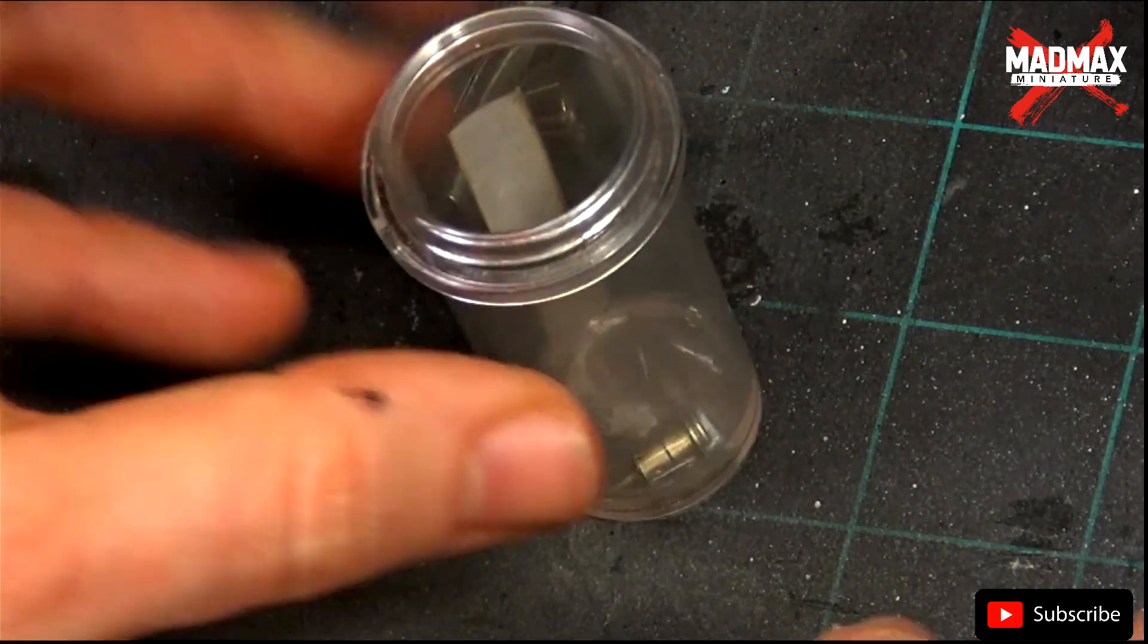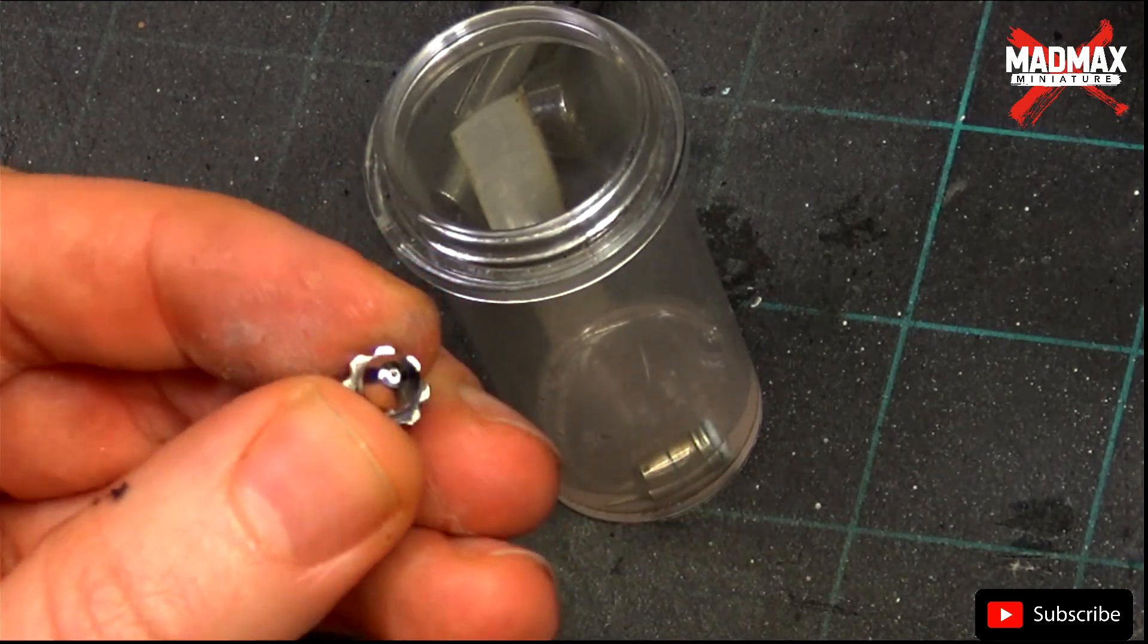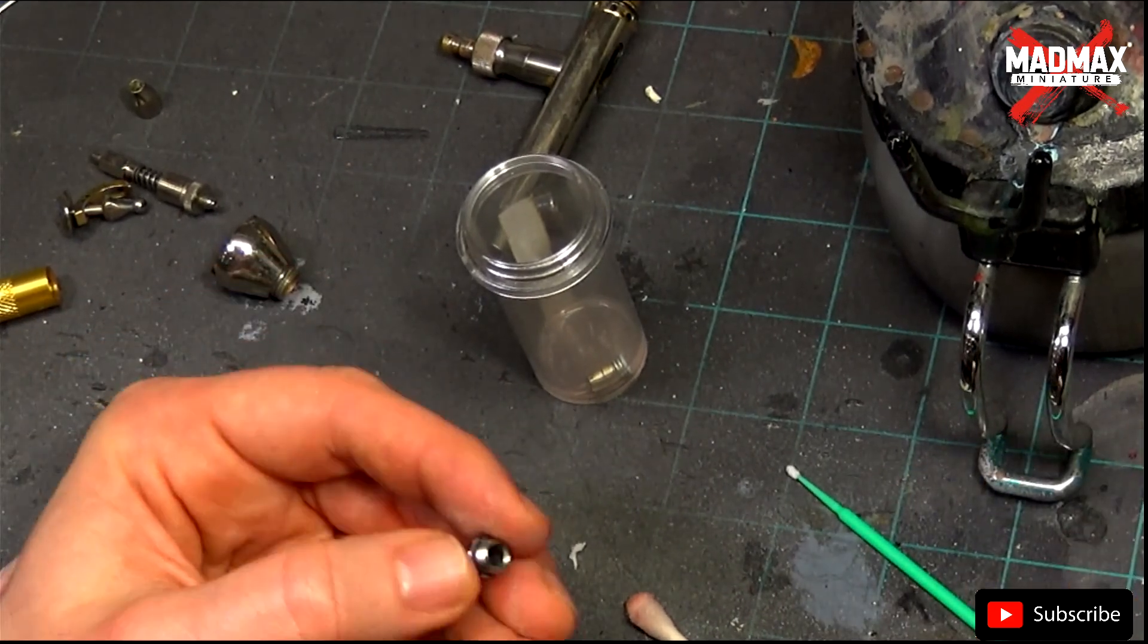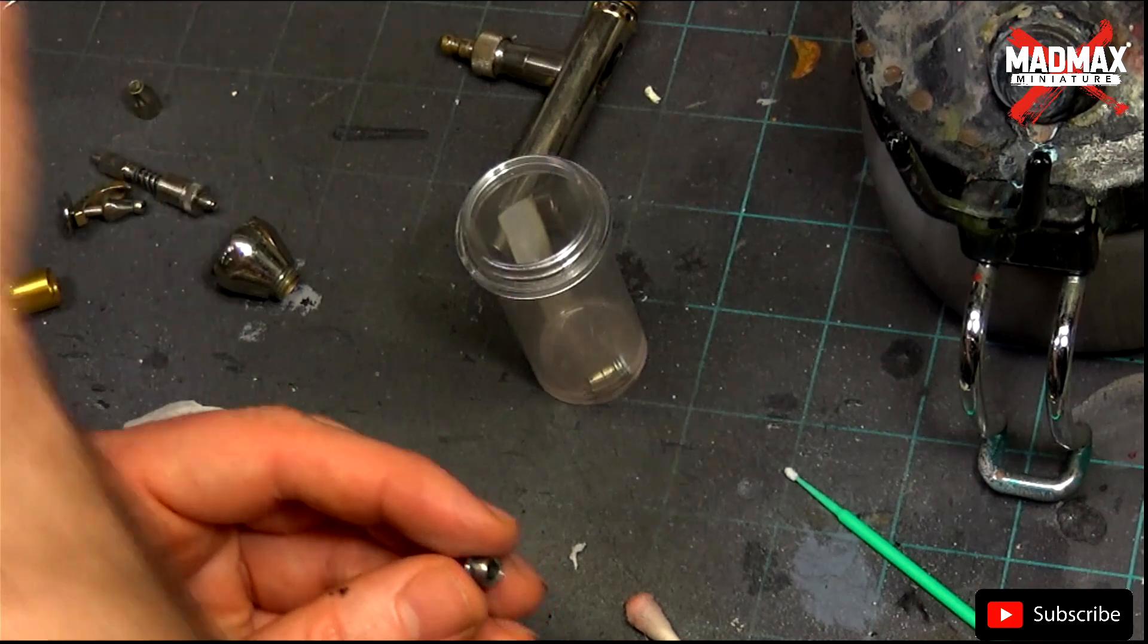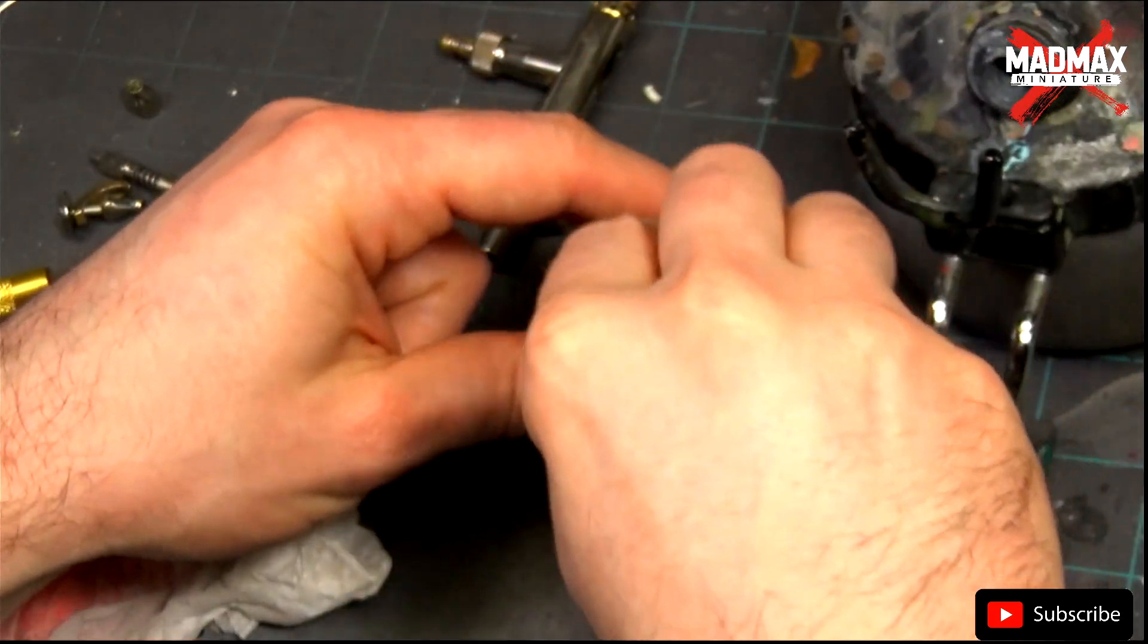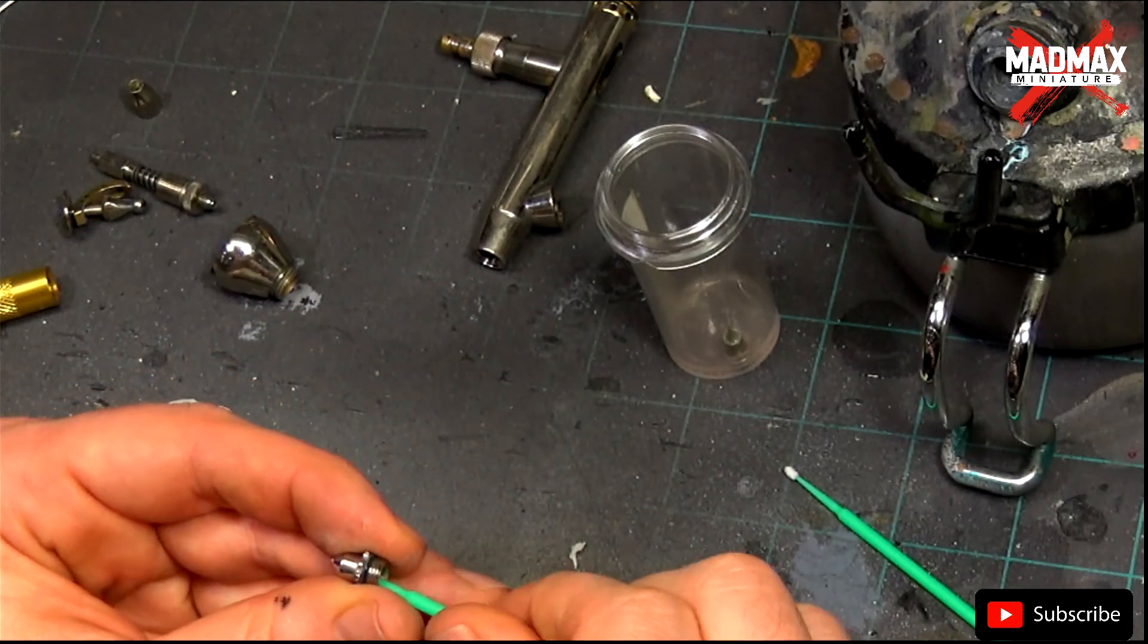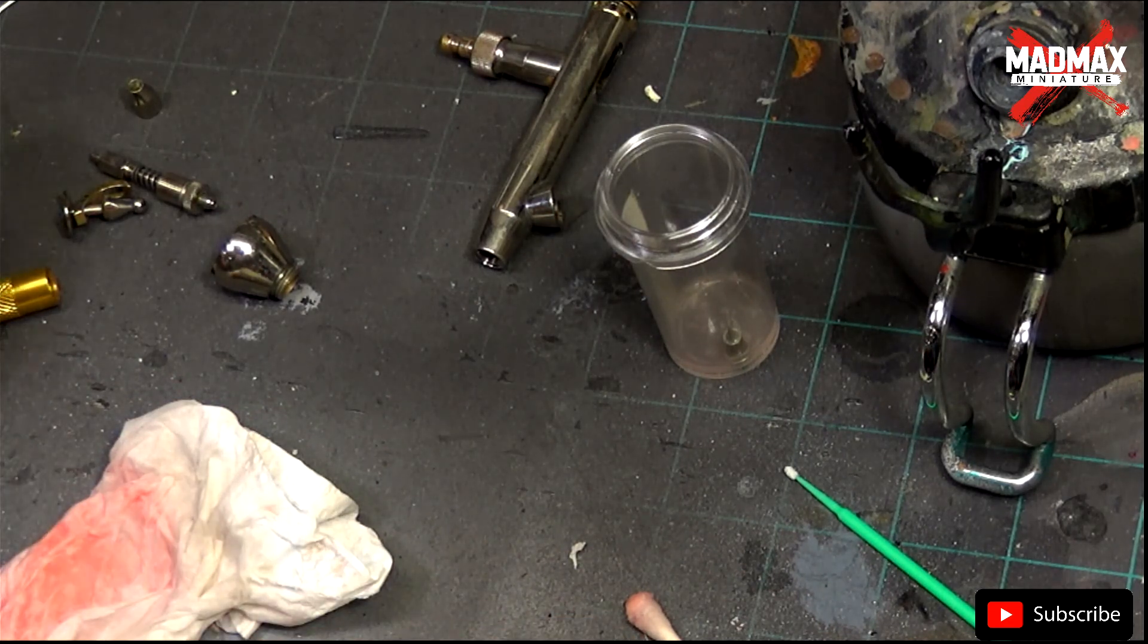Keep cleaning all the pieces until they are like new so you will be sure that your airbrush will be working correctly next time. Repeat the process until everything is clean. Sometimes you have to wash a piece two and three times to get it clean correctly.